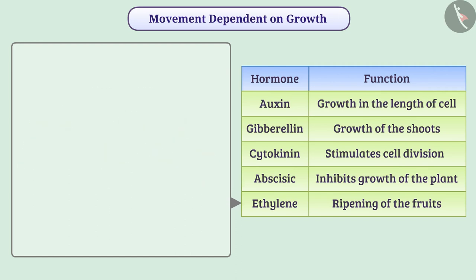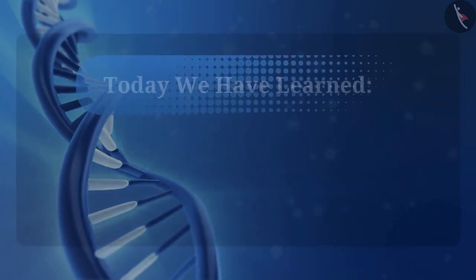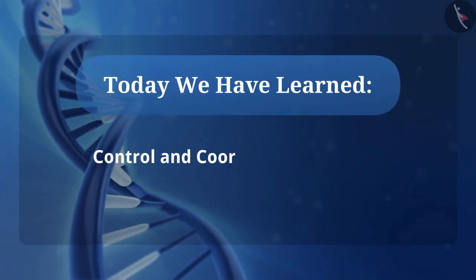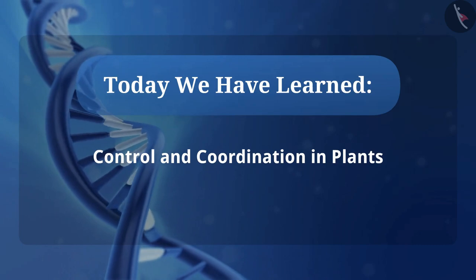Hormone ethylene, which is a gaseous hormone, causes the ripening of fruits. In the same way, various plant hormones help the plant to grow, develop, and to control and coordinate responses to various environmental stimuli. Today we have learnt about control and coordination in plants.